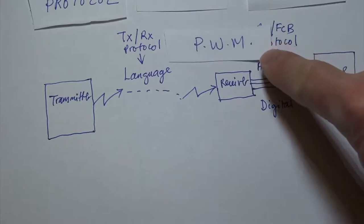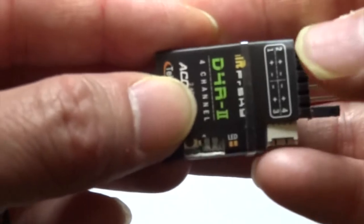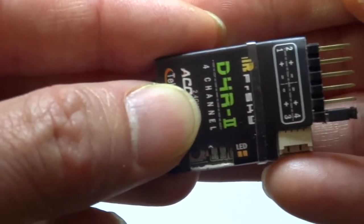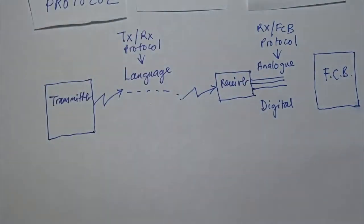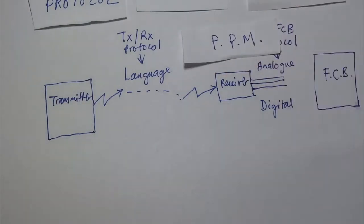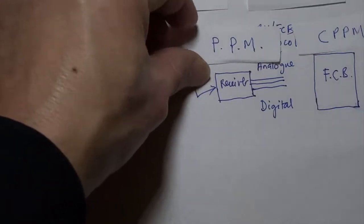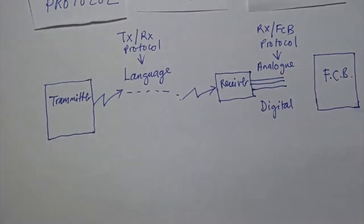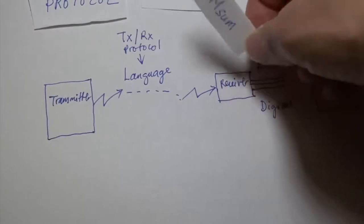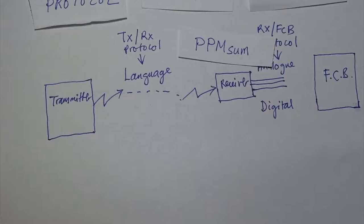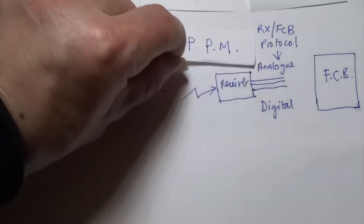With PWM, every channel requires three wires — ground, positive, and the signal wire. So if you have a receiver with four channels, each channel will have three wires. It's very rare nowadays that you'd use PWM. For analog you also have PPM, CPPM, PCM, and PPM Sum — the most common analog option with three wires is PPM.